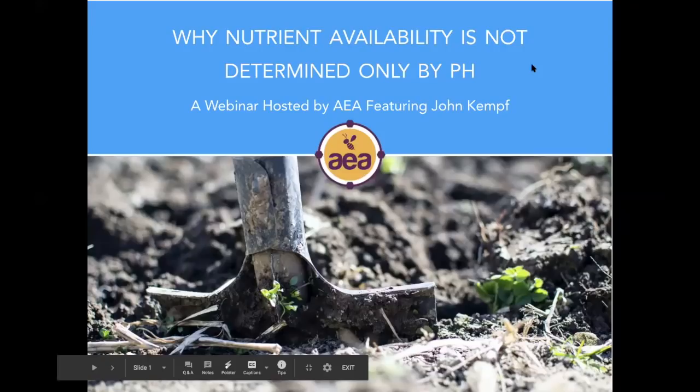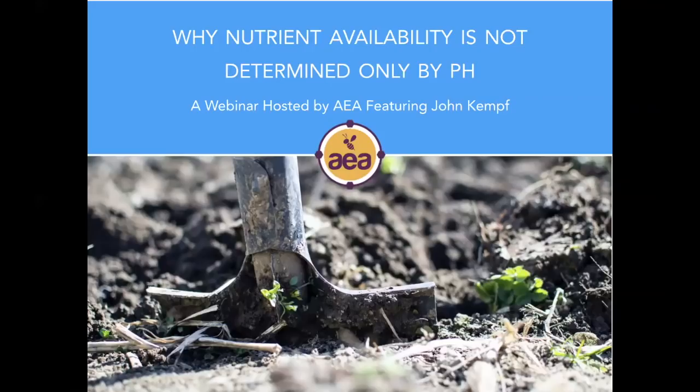The topic for our webinar today is a discussion about why nutrient availability is not determined only by pH. This is becoming fairly well known, particularly in the domain of regenerative agronomy and agriculture. People are beginning to understand that nutrient availability is significantly determined by microbial activity — the degree of bacterial and fungal populations that are able to extract nutrients from the soil mineral matrix and make them available to plants.